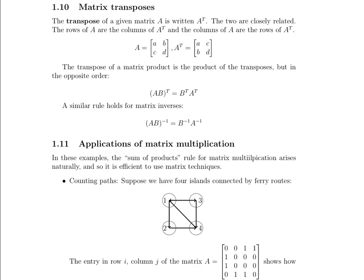Our next topic is matrix transposes. The transpose of a given matrix A is written A with a superscript capital T, and that corresponds to the transpose of matrix A. The two are very closely related — what happens is that the rows of A end up being the columns of A transpose, and the columns of A end up being the rows of A transpose.